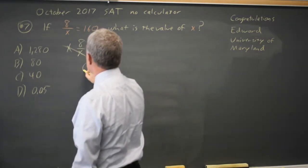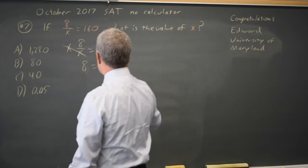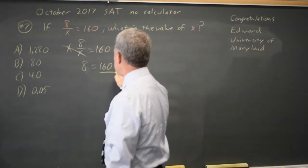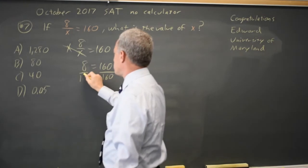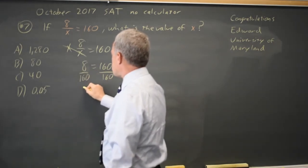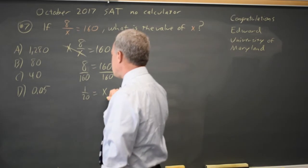x over x is 1, that should leave just 8 on the left equals 160x on the right. To get x by itself, divide by 160, and 8 over 160 is 1 over 20 equals x.